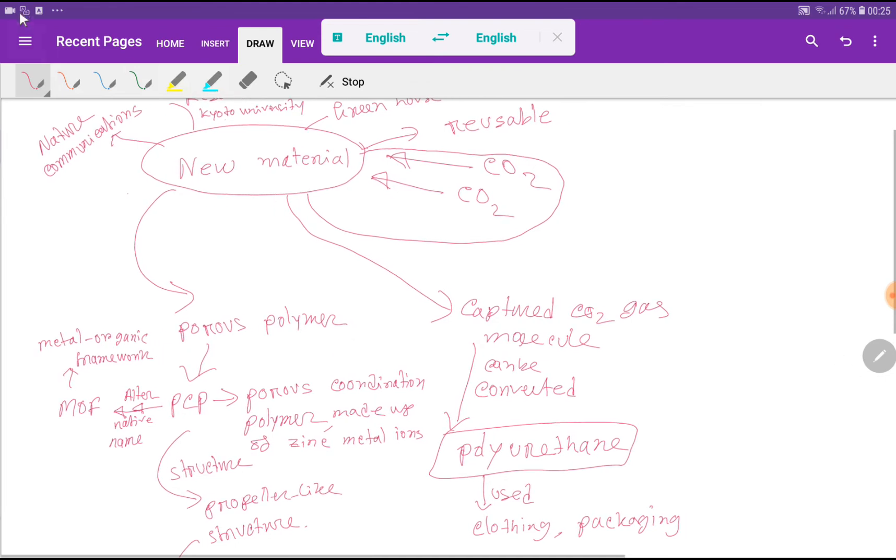The name of this new material is PCP, that is Porous Coordination Polymer. This is one type of porous polymer. So the name of this new material is PCP, that is Porous Coordination Polymer.